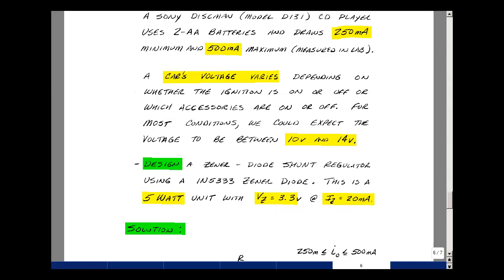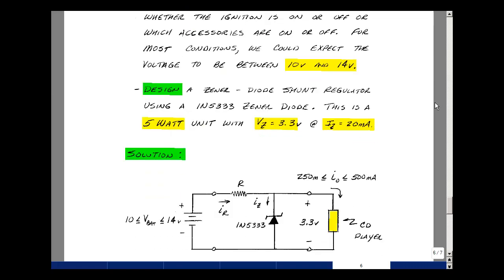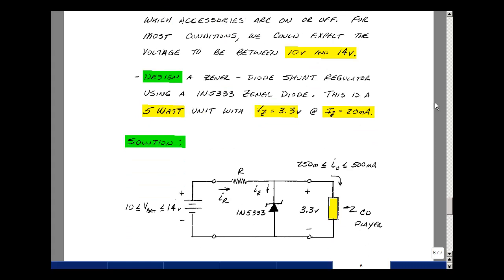We have a lot of different conditions for this particular application. Let's see if we can write them all on the schematic. Let's take the schematic that we used in the class notes, and so what I've got is my Zener across my CD player, where the current in the CD player is somewhere between a quarter amp and half an amp, and the battery could be somewhere between 10 volts and 14 volts. I need to pick the resistor R and select the wattage of it to make sure it doesn't melt, and then check the wattage of the Zener to make sure that I haven't put too much power into that.